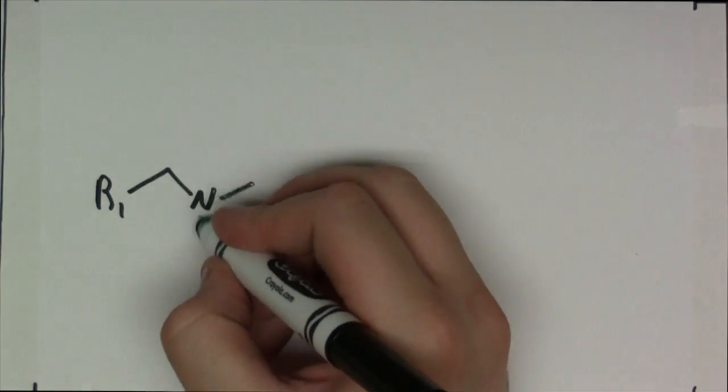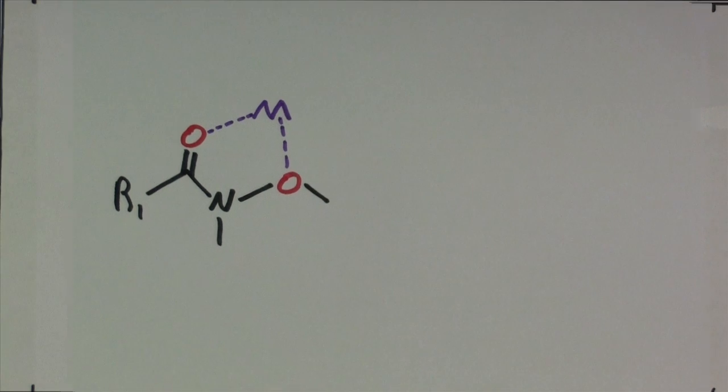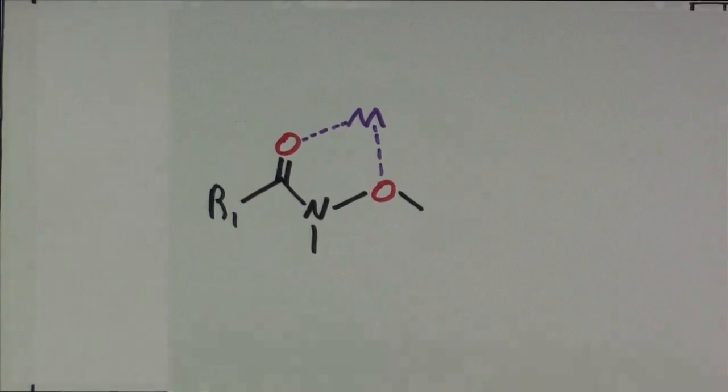So what's cool about the Weinreb amide is that both of the oxygens in the molecule can chelate to a metal while a reaction with the rest of the molecule occurs. And this has fascinating implications.